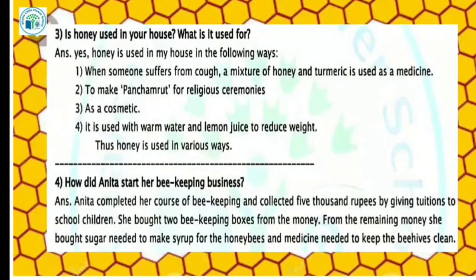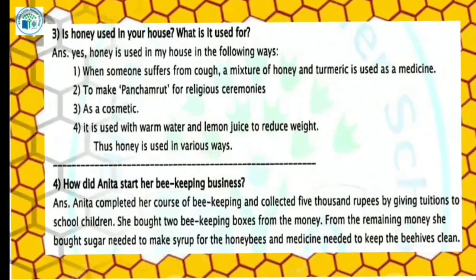Our next question is: how did Anita start her beekeeping business? Anita completed her course of beekeeping and collected 5000 rupees by giving tuition to small children. She bought two beekeeping boxes with that money. From the remaining money she bought sugar needed to make syrup for the honeybees, and medicine needed to keep the beehives clean.